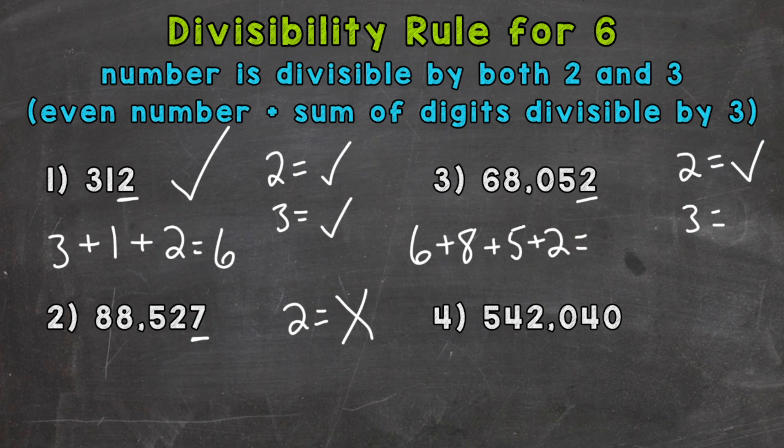6 plus 8 is 14, plus 5 is 19, plus 2 is 21. So is 21 divisible by 3? 21 divided by 3 is 7 without a remainder. So it is divisible by 3.